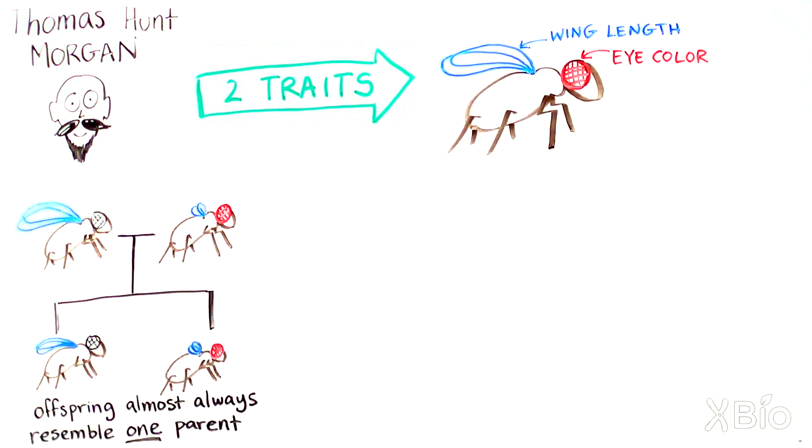Unlike the experiments from Mendel, these traits were not assorting independently. Instead, these traits were what he called linked to each other. So what was going on?